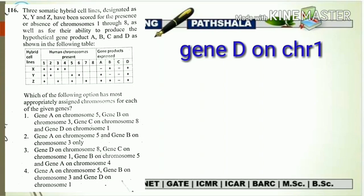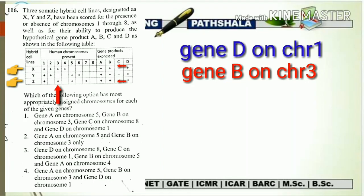Now let's talk about gene B. From the given data, gene B is present in hybrid cell line X, absent in Y, and again present in Z — indicating the pattern plus, minus, plus. We have to tally the same pattern with the given chromosomal data. Chromosome number 3 follows the same pattern: plus, then no sign (which we consider as minus, indicating absence), and again plus. So we can say that gene B is present on chromosome number 3.